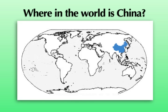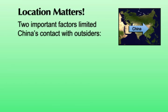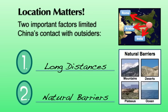Now that we've talked about the location of China, let's see if we can understand exactly why that location is so important. There are two important geographic factors that limited China's contact with outsiders. One example would be long distances. Because of China's location in Eastern Asia, they were simply very far away from other contemporary civilizations at that time. But there's another geographic factor at work here as well, and that is natural barriers.